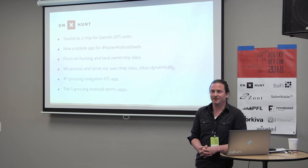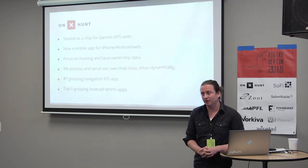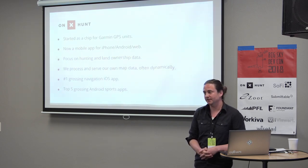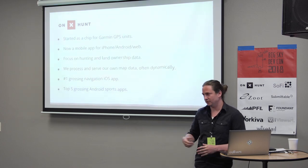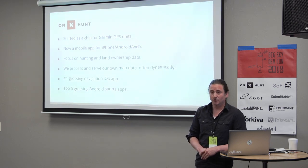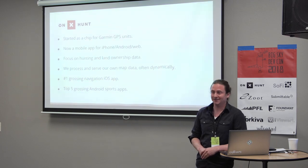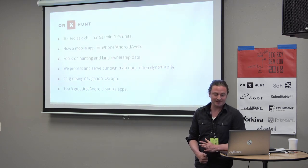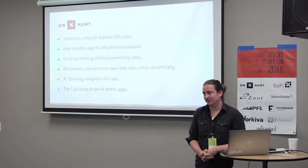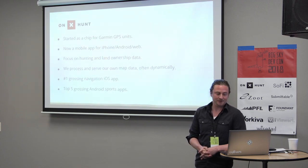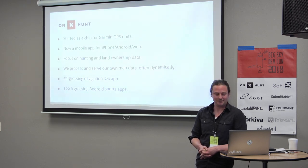The interesting thing about Onyx Maps is we serve all of our own map data — we don't use another service. A lot of companies, like Uber, have a partnership with a mapping technology company that provides the map part. We serve our own maps, do a lot of analysis, and even serve map data dynamically, meaning we produce one-off map data for users. It's a pretty big and complicated GIS operation.